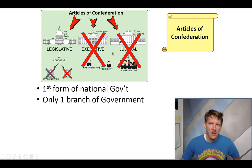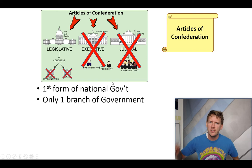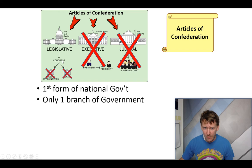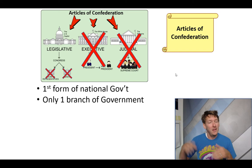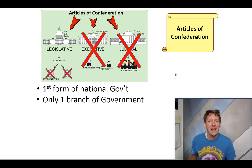Let's go through some of the weaknesses of the Articles of Confederation. First, it was the first form of national government. Second, there was only one branch of government — no executive branch, no judicial branch. The legislative branch, the branch that makes laws, was unicameral. So you just had one legislative branch in this document that could make laws. The libertarians, minarchists, and anarchists are going to say that's kind of a good thing — less government, smaller government. We like the Articles of Confederation.